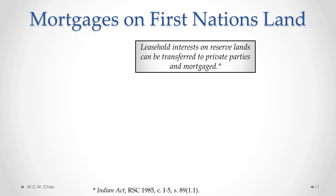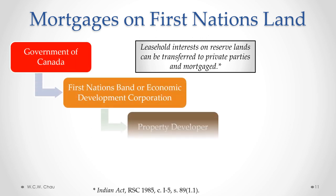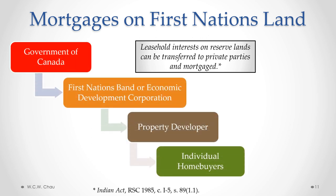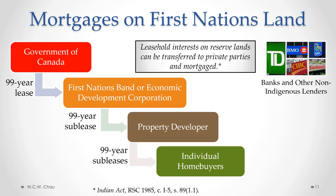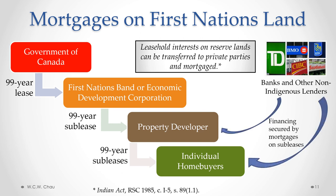A common way of getting around this problem is to take advantage of the fact that leasehold interests on reserve lands can be transferred to private parties and mortgaged. For example, the Government of Canada as title holder enters into a 99-year lease with the First Nations band or an economic development corporation owned by the band. The land is then subleased to a property developer, who in turn sells subleases to individual home buyers. This use of leases and subleases allows banks and other non-Indigenous lenders to provide financing secured by mortgages on those subleases.